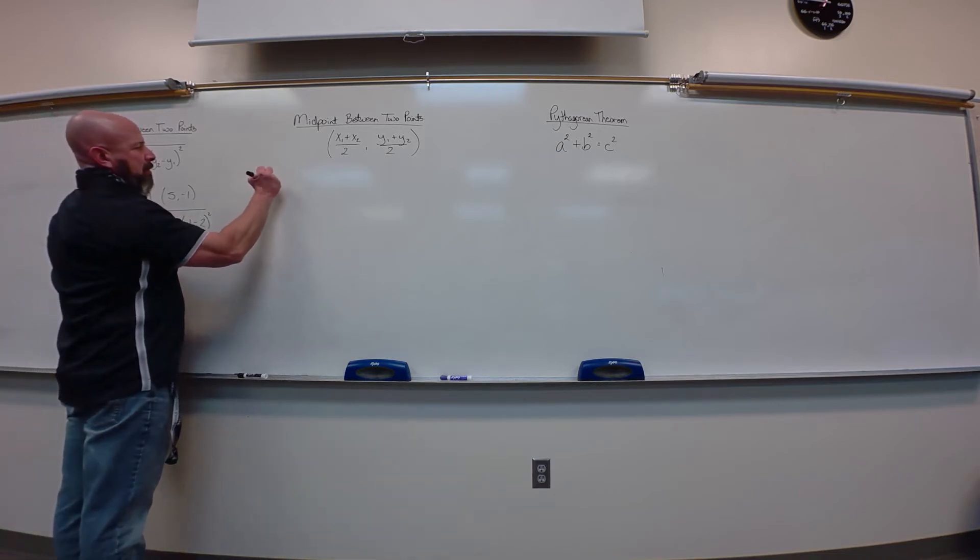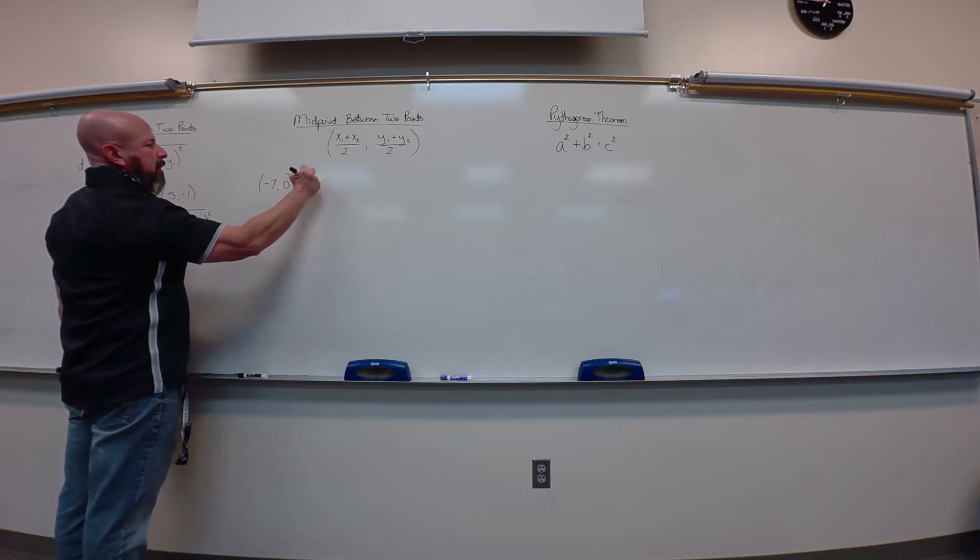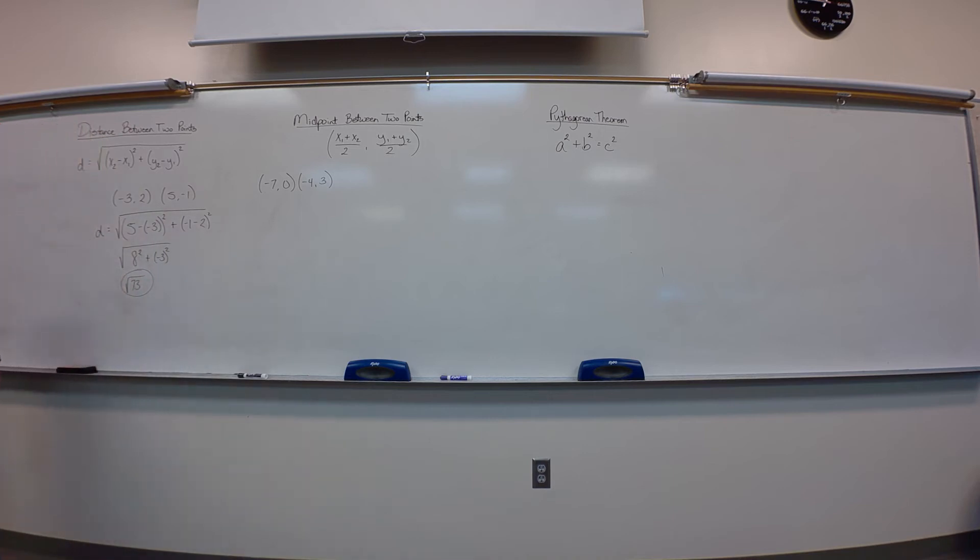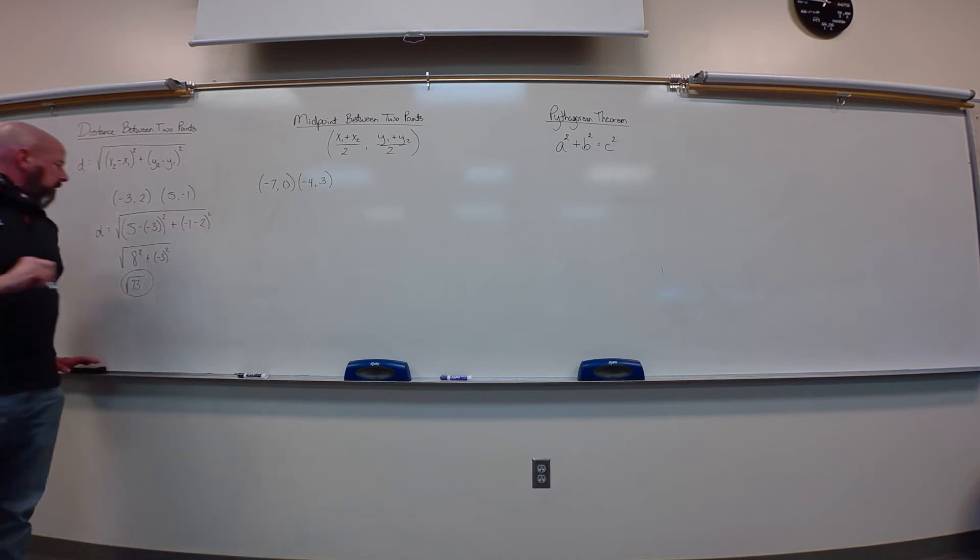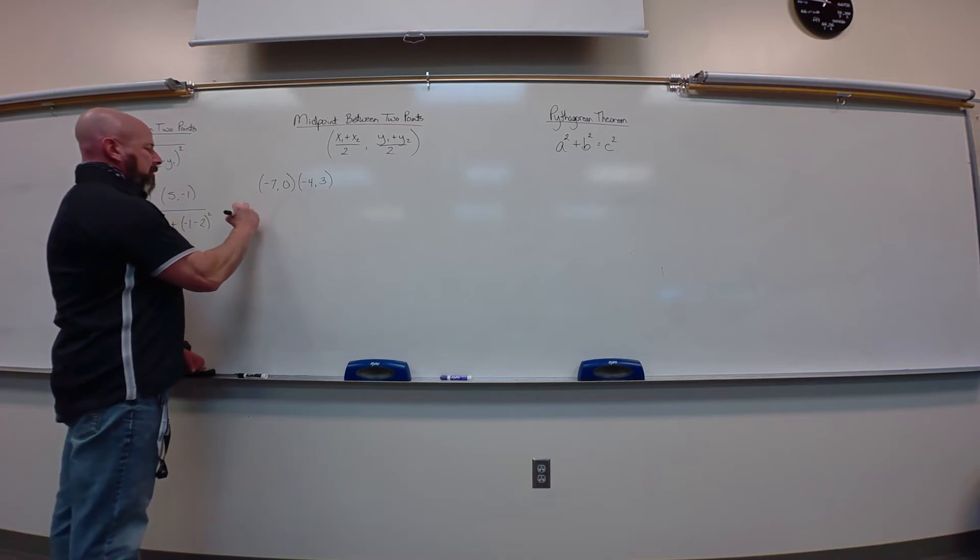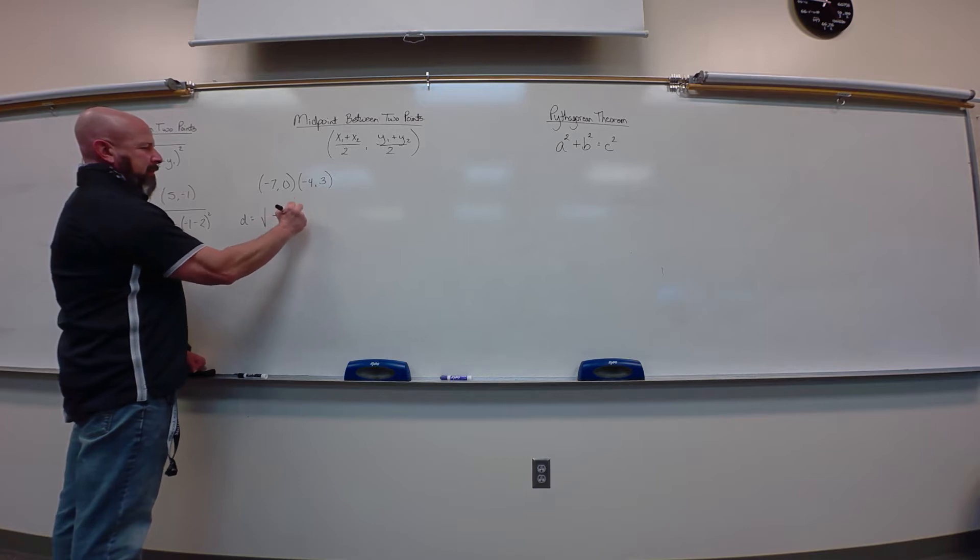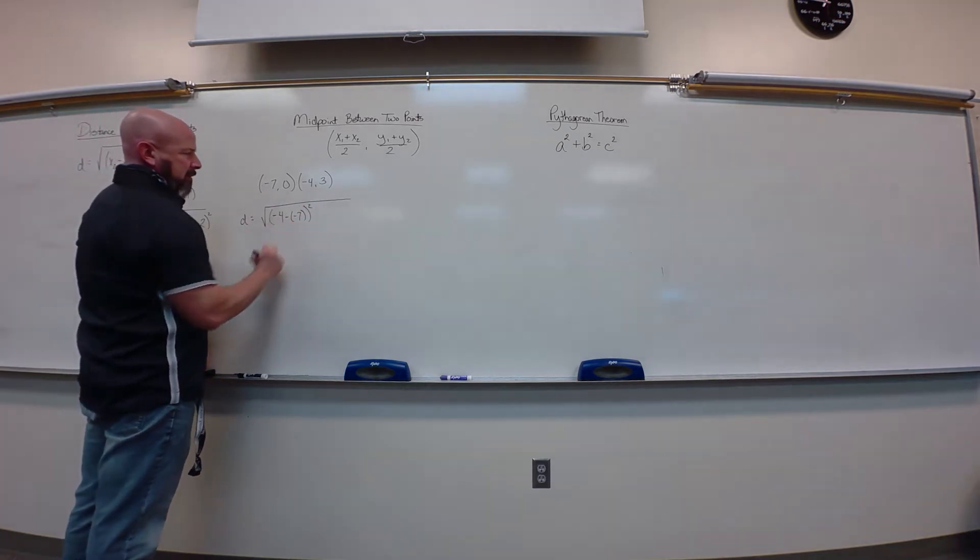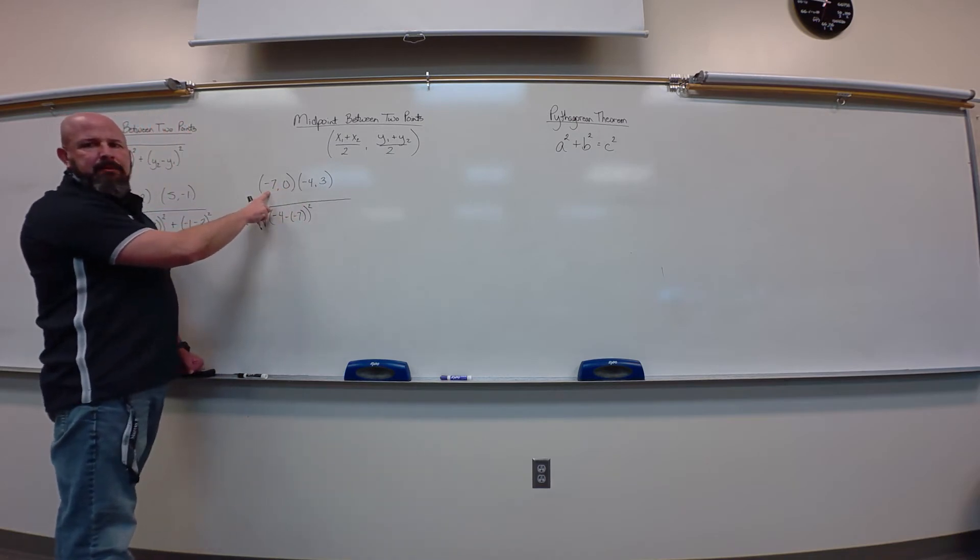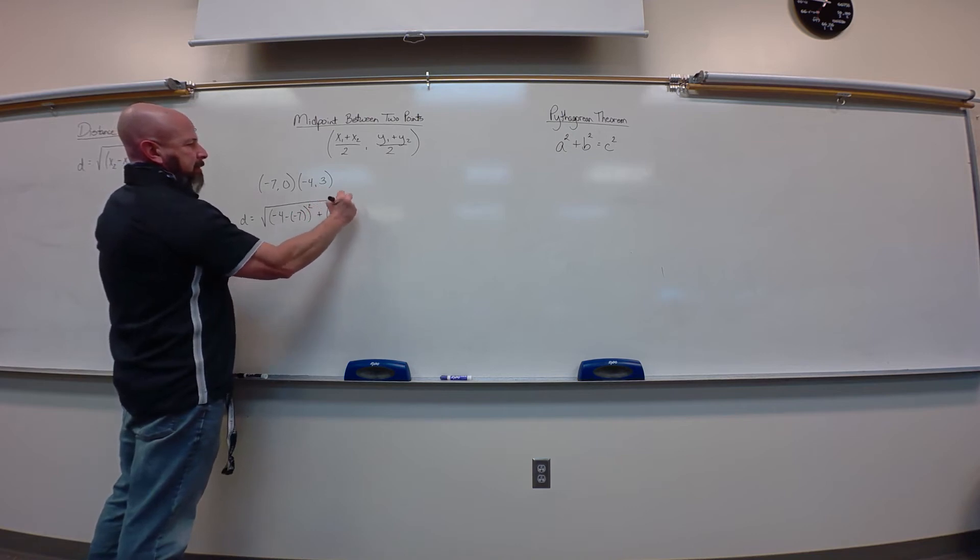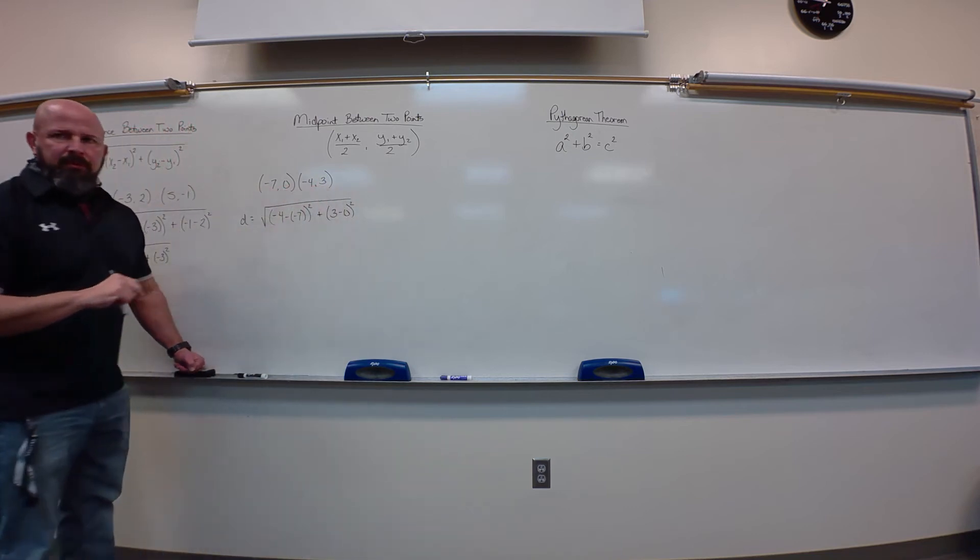Let's do another one. Let's go negative seven, zero. Negative four, three. So, we'll start with the difference in our X's, negative four minus negative seven squared. So, I did second X minus first one, plus three minus zero squared, second Y minus first one. The rest is just simplifying.